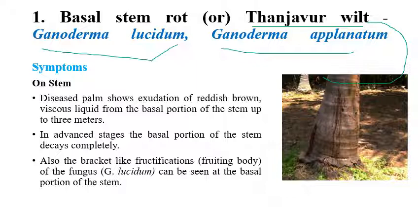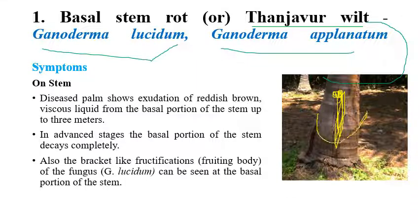On the stem, a reddish-brown colored viscous liquid is exuded from the basal region. This exudation can also be seen at a height of three to four meters on the stem. The fungus also produces a bracket-like fructification — a fruiting body of Ganoderma lucidum, the causal organism — visible at the basal portion of the stem.